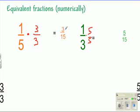Now I can compare fifteenths to fifteenths. So clearly, one-fifth, which is three-fifteenths, is less than one-third, that is five-fifteenths.